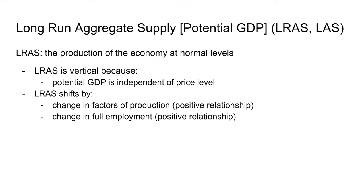Long-run aggregate supply, or potential GDP, is the production of the economy at normal levels. The LRAS curve is vertical because potential GDP is independent of the price level. You can shift LRAS by changing factors of production or by changing full employment.